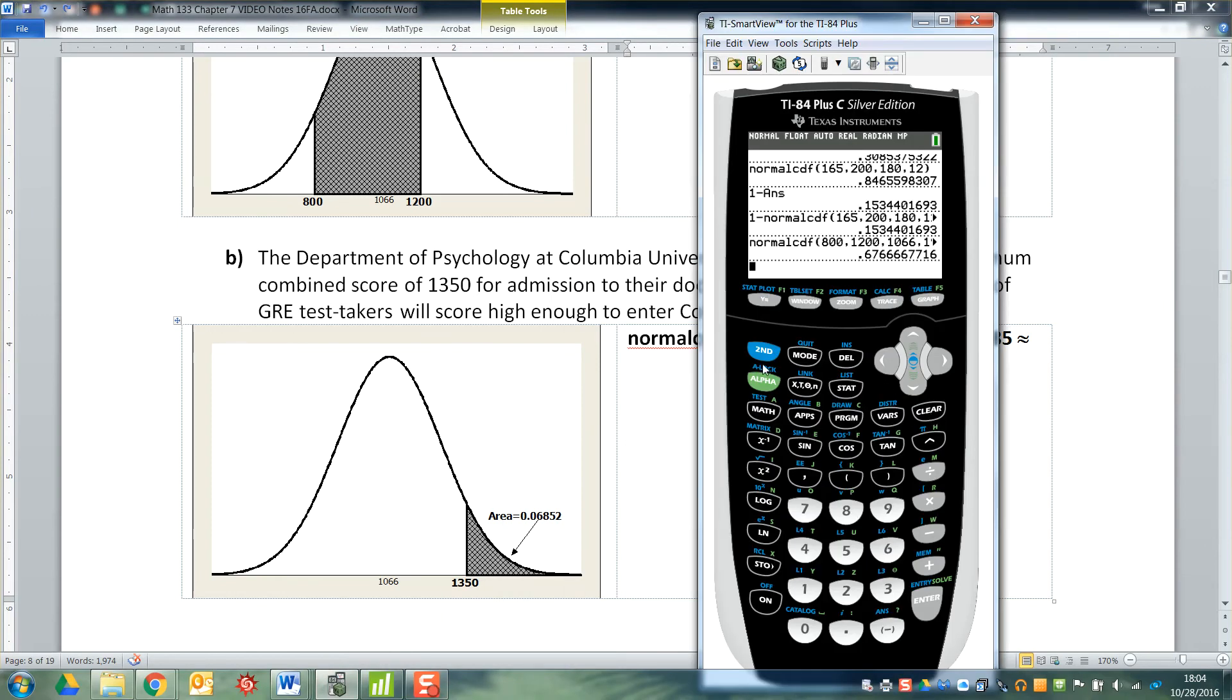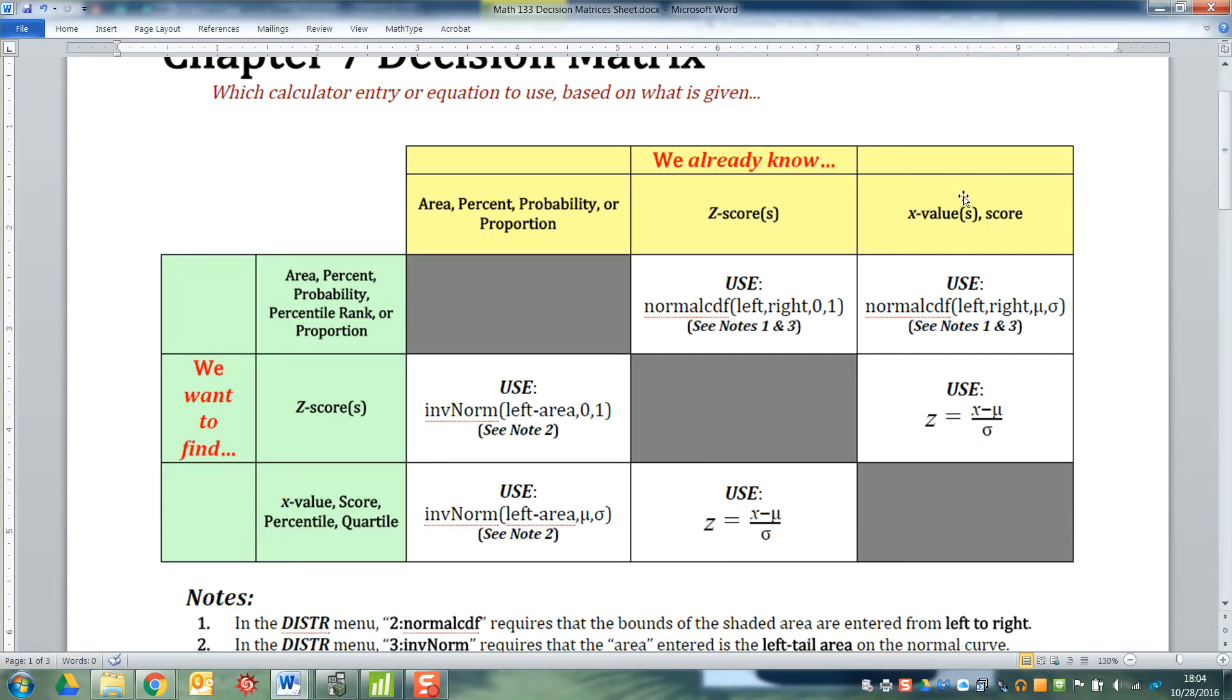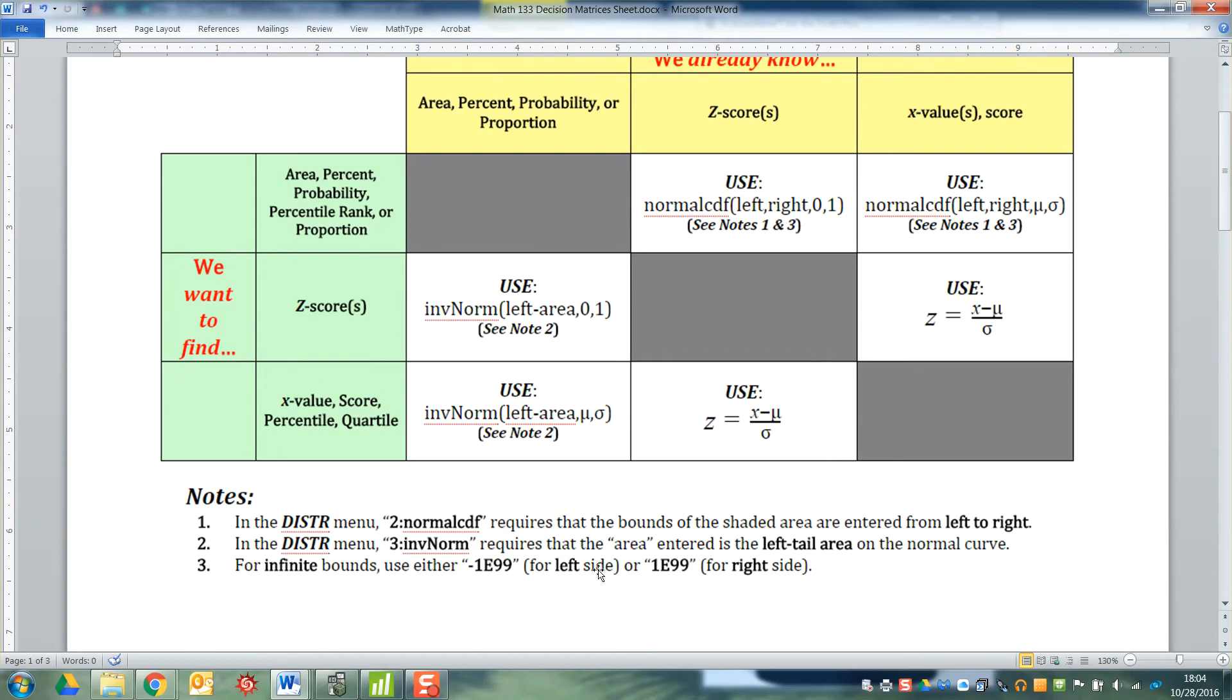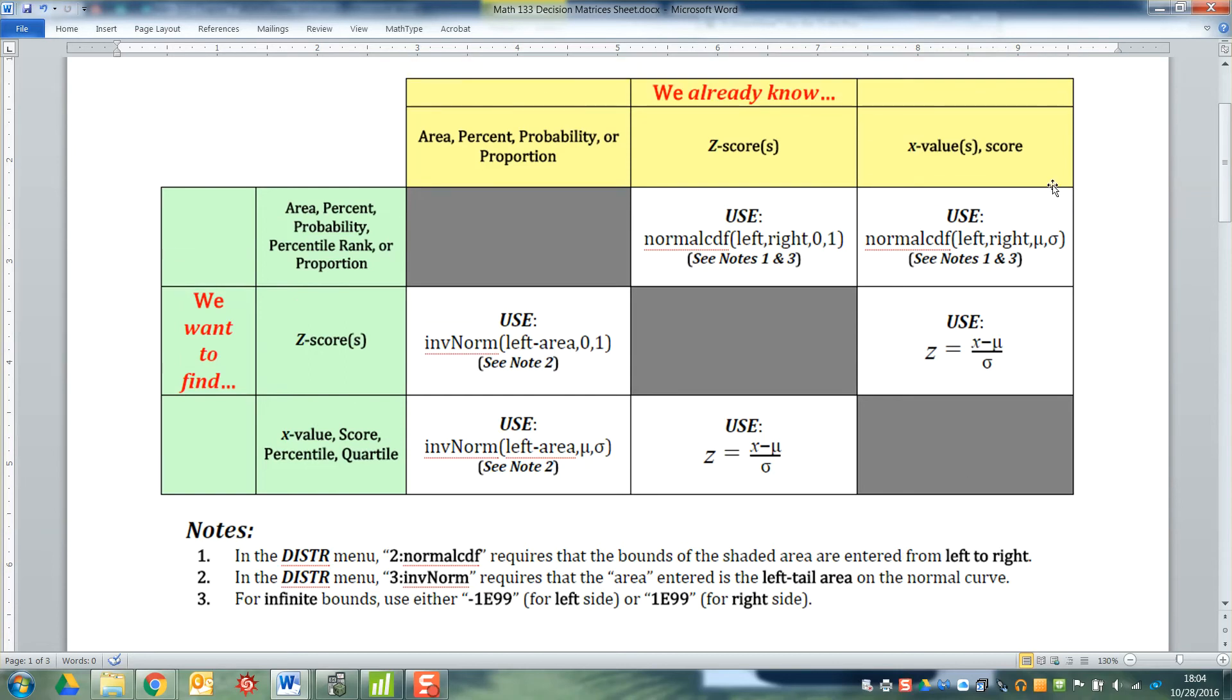If I grab the calculator and I go to distribution, normal, and remember if you look at the decision matrix we know the score, we're looking for the proportion or probability. What proportion? So normal CDF left comma right, but my right bound doesn't exist. It goes forever. So remember note number three, you are going to use 1E99 to stand for infinity essentially.